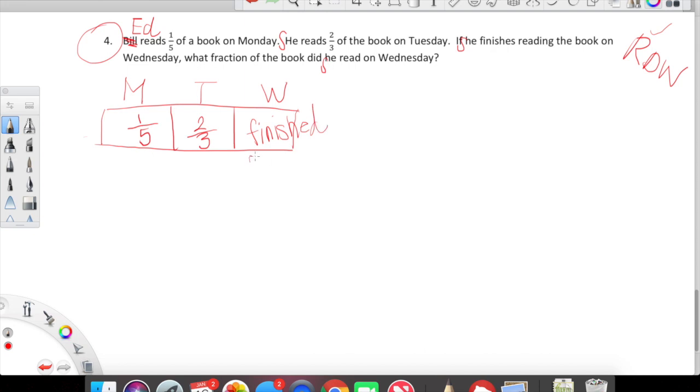And we want to know how much of the, how much did she read on Wednesday or how much did, what fraction of the book did she read on Wednesday in order to finish the book? So, first we need to figure out, what did she read on Monday and Tuesday? In order to figure out what did she read on Monday and Tuesday? We're going to add Monday and Tuesday's reading up together. One fifth was read on Monday. Two thirds was read on Tuesday. Let's go ahead and find a common denominator between five and three. I think this is the same common denominator we just had. So let's go ahead and just multiply five and three together. We'll use that strategy. Five times three is fifteen. So a common denominator between five and three is fifteen. Wonderful.